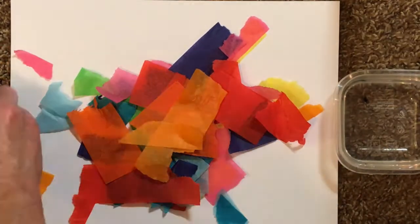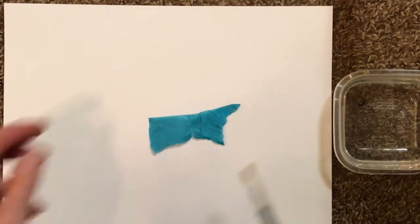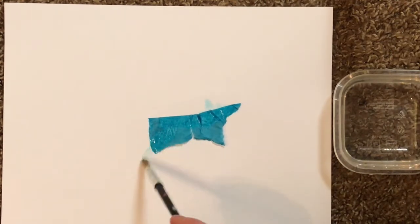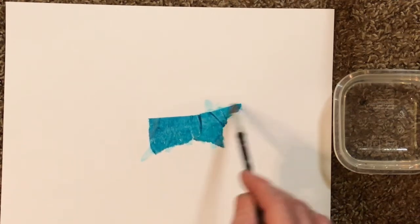Once you have a nice pile of tissue, it's time to wet your paper. We're only going to wet one spot at a time, drop the tissue on top, and then wet it again. You've got to be very careful with that brush that you don't push the tissue around or ball it up or ruin it.